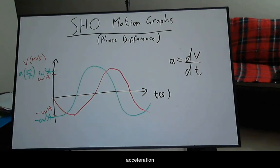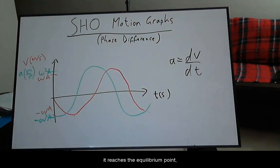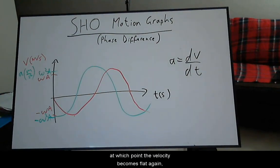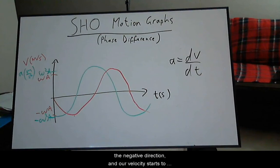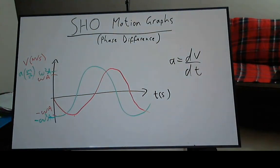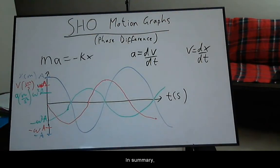At this point, the velocity continues to increase in the positive direction, but acceleration starts to decrease until it reaches the equilibrium point, at which point the velocity becomes flat again but having a maximum positive value. After which, the acceleration is in the negative direction and the velocity starts to decrease until it returns to zero and starts a new cycle.